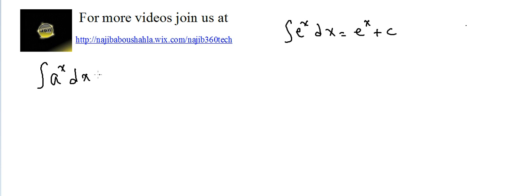We can change it to e power something. We can say that a^x is equal to e^(ln(a^x)), because ln and e are inverse functions, so they cancel each other, and what remains is a to the power x.